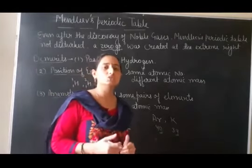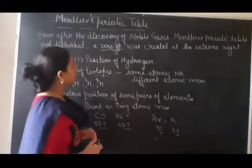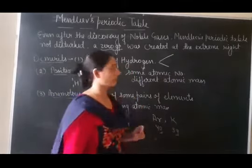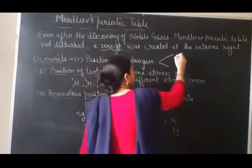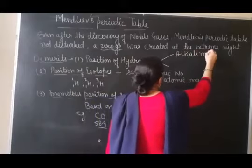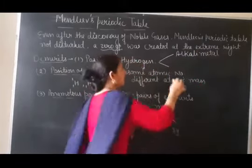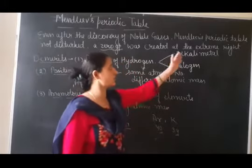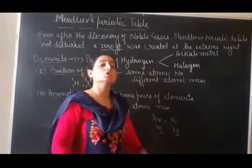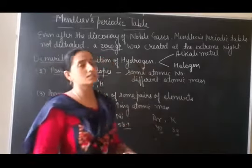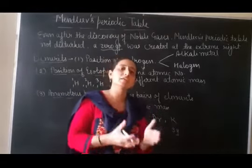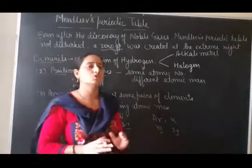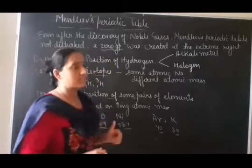After merits, we discuss demerits - the shortcomings that the modern table tried to fix. The first demerit is the position of hydrogen. Hydrogen comes first in the table but its position is uncertain - it should either be placed with alkali metals like sodium and lithium, or with halogens. Hydrogen shows similarity with both groups due to having one electron, so this anomalous position of hydrogen remains unresolved.